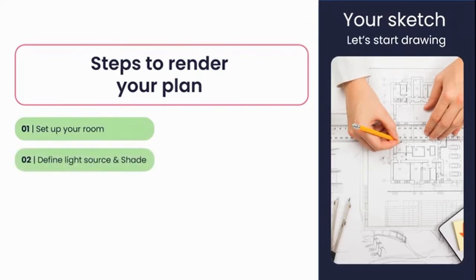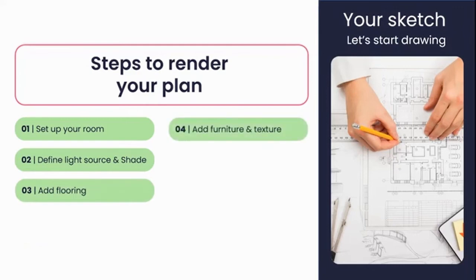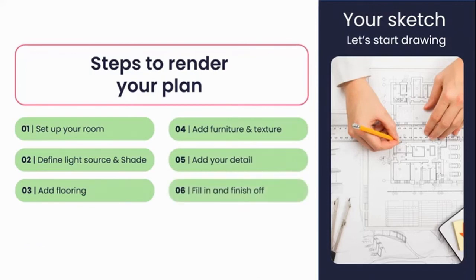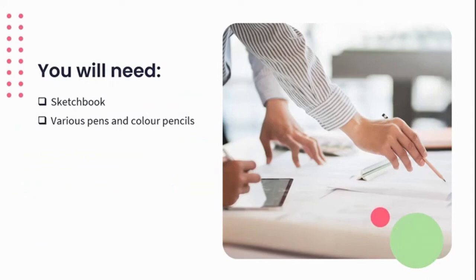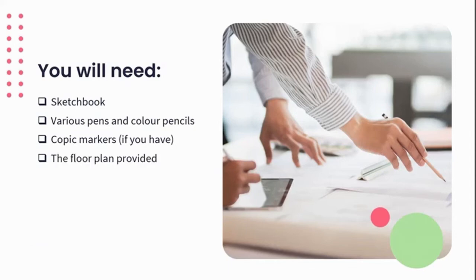Let's start by looking at the steps to render our floor plan. Rendering means to bring your drawings to life using realistic texture and color. Step one: set up your room — familiarize yourself with each room and the color scheme and style you want to portray. Step two: define a light source and shadow — use your pencil to define where the sun comes in, then arrange shadows at a 45-degree angle using a ruler and Copic pencil with light brush strokes. Step three: add flooring and base level. Step four: add texture and detail to furniture. Step five: add detail to the drawing. Step six: fill in and finish off your drawings.